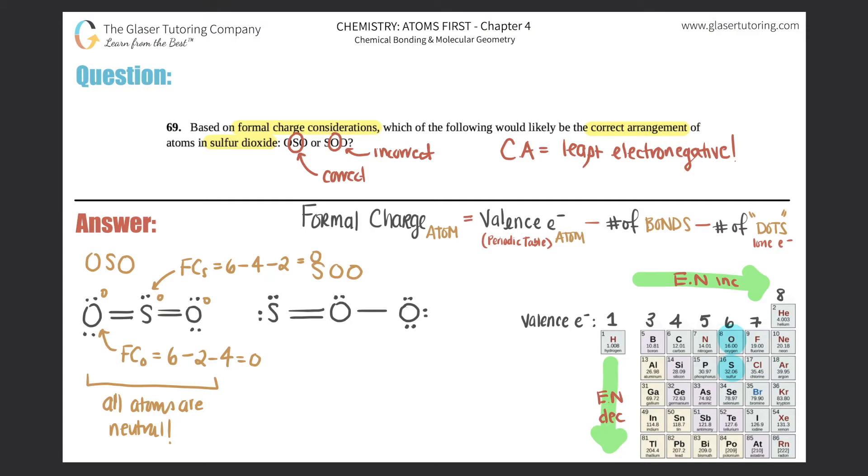Now let's check for these. These look all different. So let's do this sulfur. Formal charge of sulfur is - sulfur has a valence of six electrons minus this sulfur has two bonds, minus how many dots? Four. So this would be neutral.